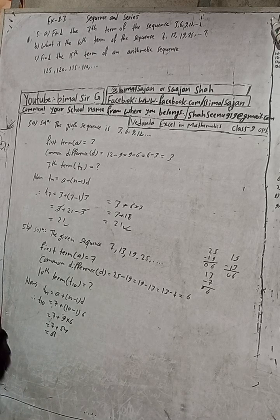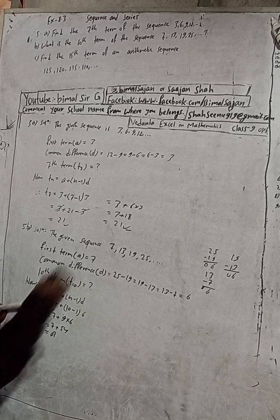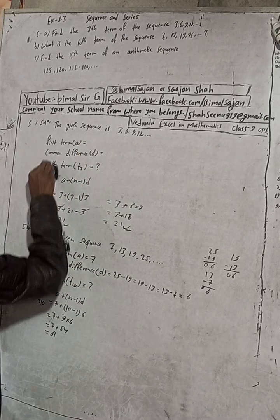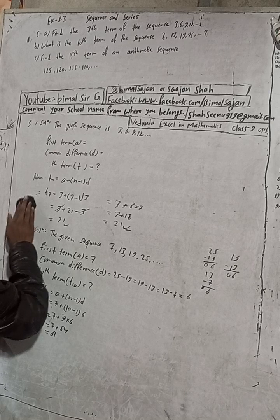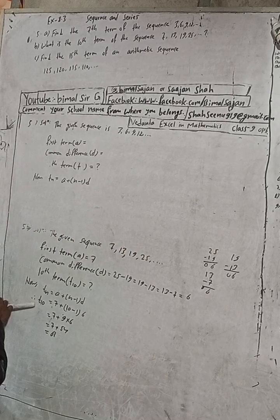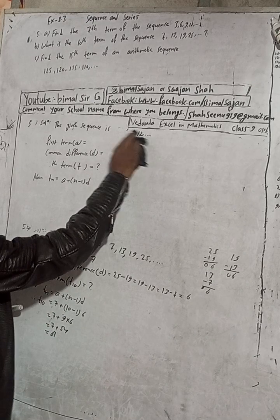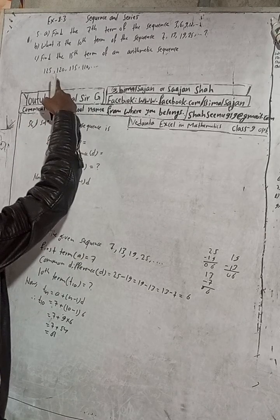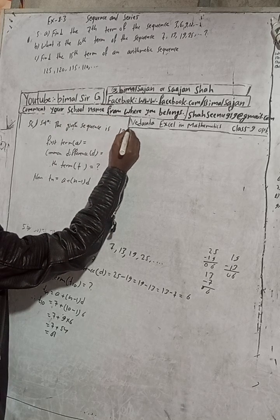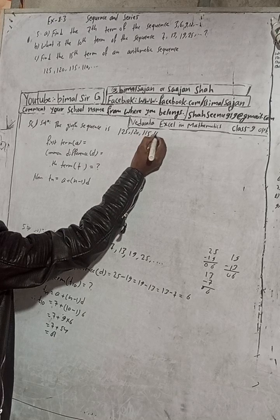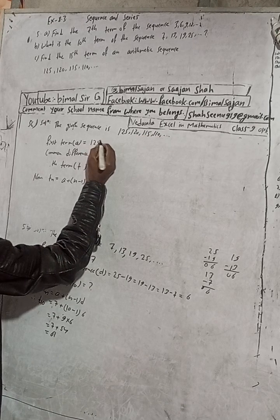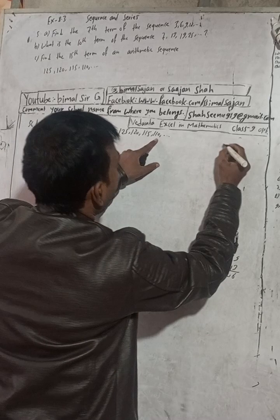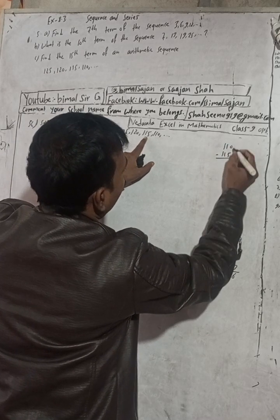Now for 5C, we need to find the 15th term. The given sequence is 125, 120, 115, 110. The first term A is 125.